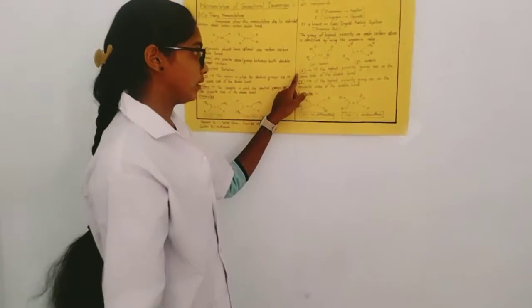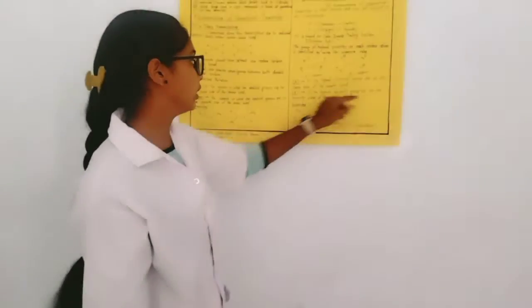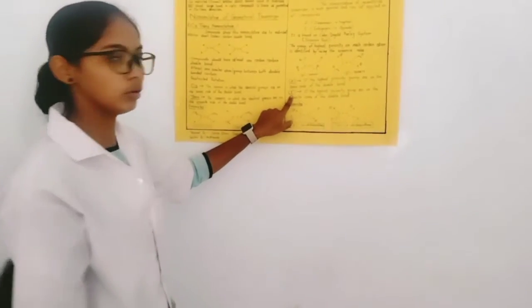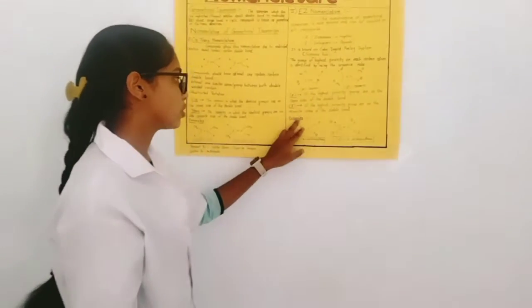In Z nomenclature, if the highest priority groups are on the same side of the double bond and in E nomenclature, if the highest priority groups are on the opposite sides of the double bonds.